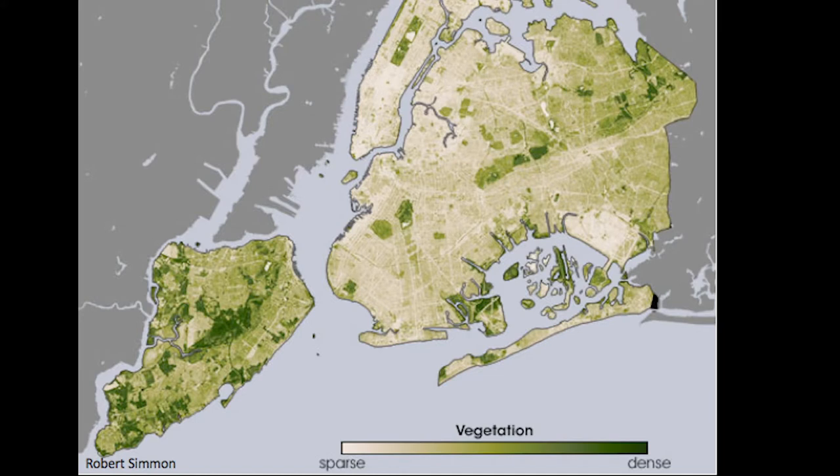Hi everyone, my name is Jessica Hoke. I'm the Project Manager of Ecological Monitoring and Assessment with the Natural Areas Conservancy, and I'm here to tell you about the role of vegetation in urban heat mitigation. In New York City, we have about 5.2 million trees on public and private property, and 24% of land in New York City is covered by tree canopy. We have about 10,500 acres of forested natural areas in the city — for reference, Manhattan is about 15,000 acres, so our forested natural areas are about two-thirds the area of Manhattan.